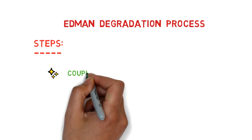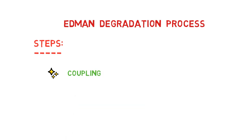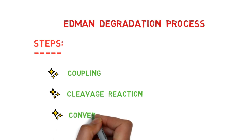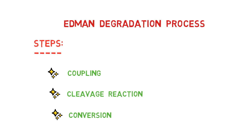Following are the steps involved in the Edman Degradation method. The first one is coupling, where Edman's reagent binds with the peptide chain. The second is the cleavage reaction, where the labeled amino acid is cleaved from the rest of the chain. And the last one is the conversion step, where the unstable molecule is converted into a final and stable form.